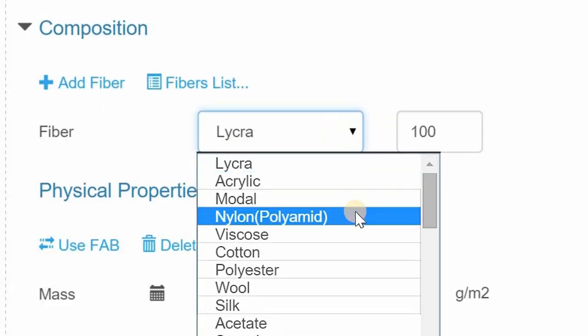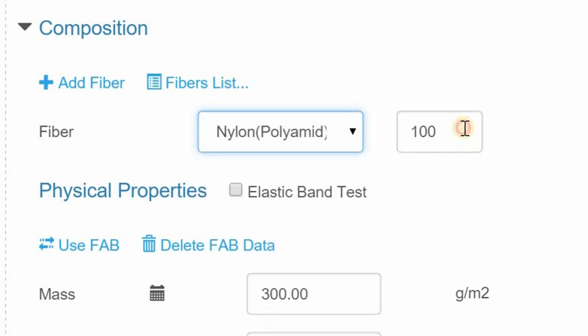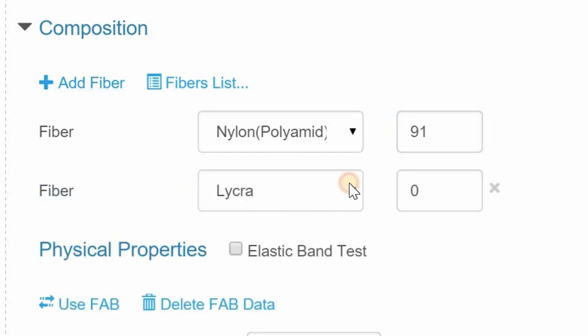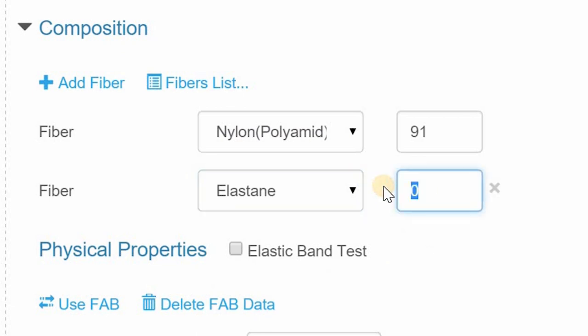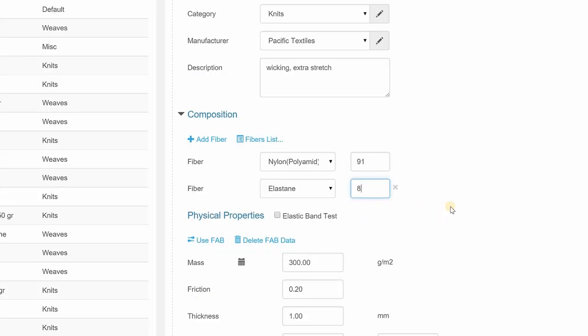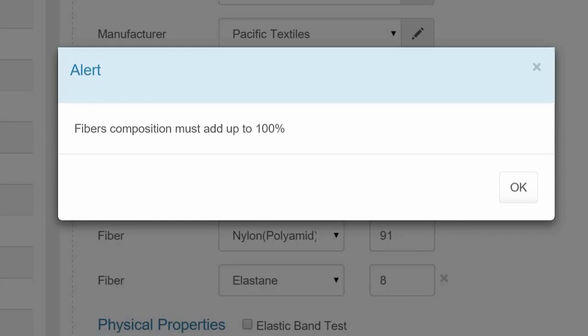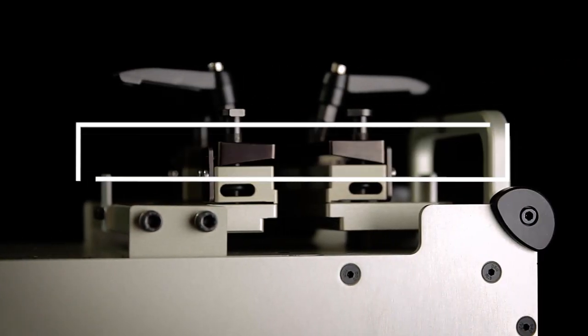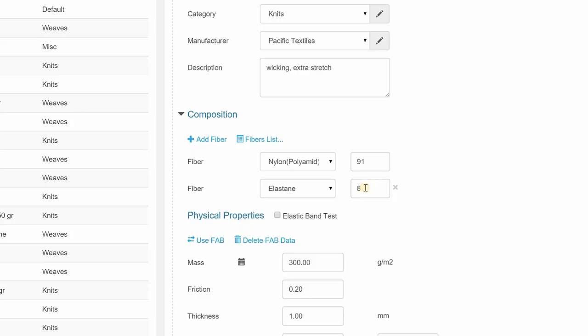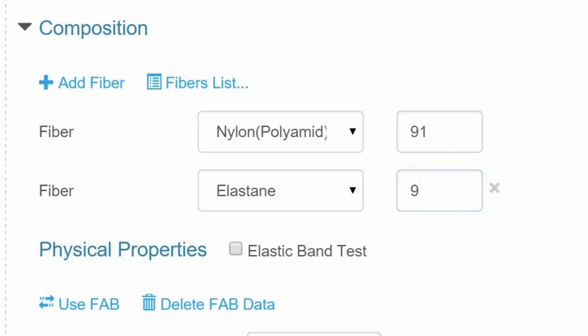In this case, we have two fiber contents, so we will click the Add Fiber button to get a second input field. Now choose the fibers from the drop-down list and fill in the percentages. Remember, the total percentage for all fabrics should add up to 100%.